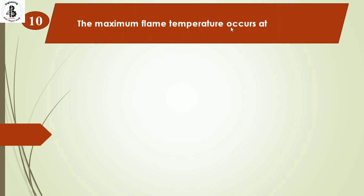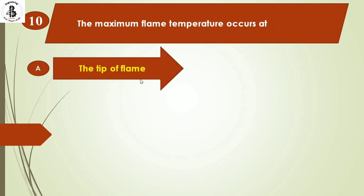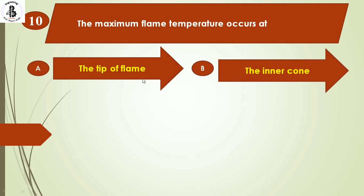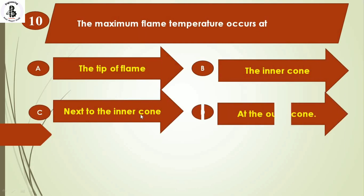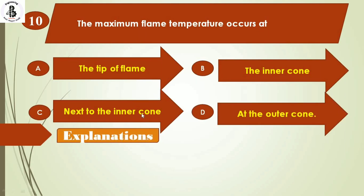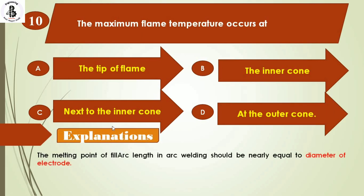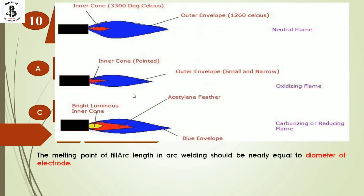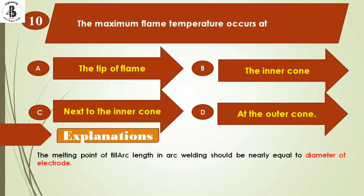The maximum flame temperature occurs at: Option A: the tip of the flame. Option B: the inner cone. Option C: next to the inner cone. Option D: at the outer cone. Looking at the figure, there are three kinds of flames. For a neutral flame, the inner cone has a temperature of 3,300 degrees centigrade, while the outer envelope is around 1,260 degrees centigrade. So the inner side has the maximum temperature. The right answer is option B: the inner cone.